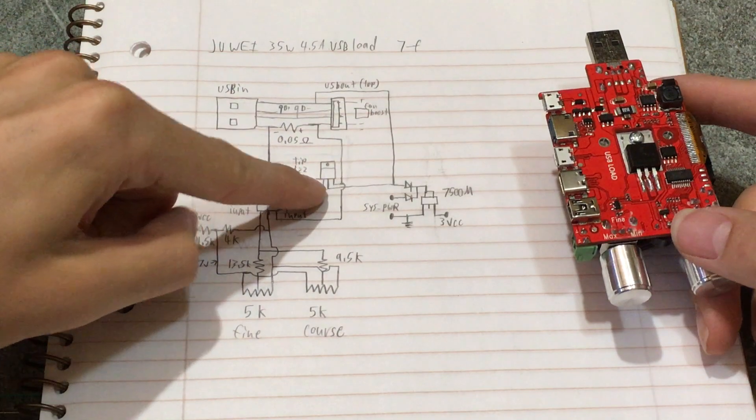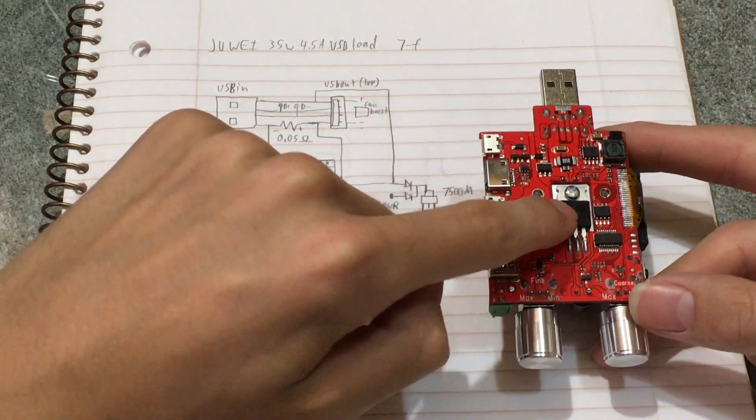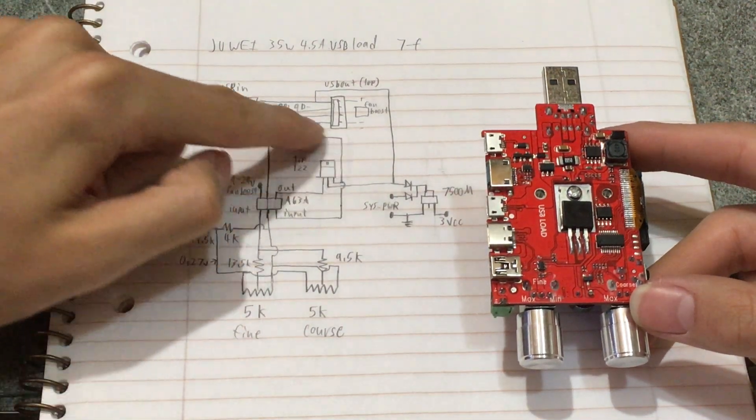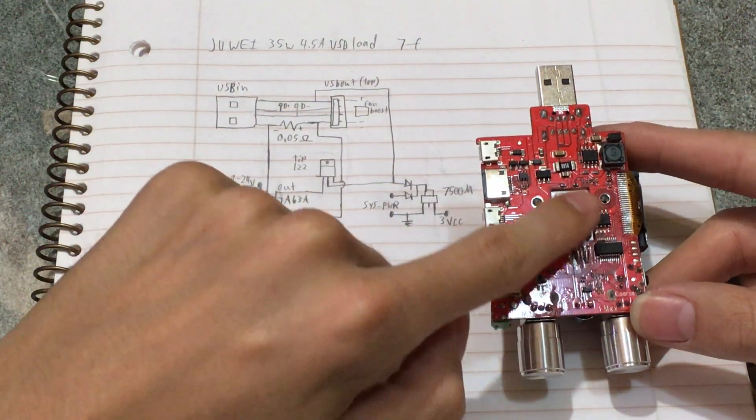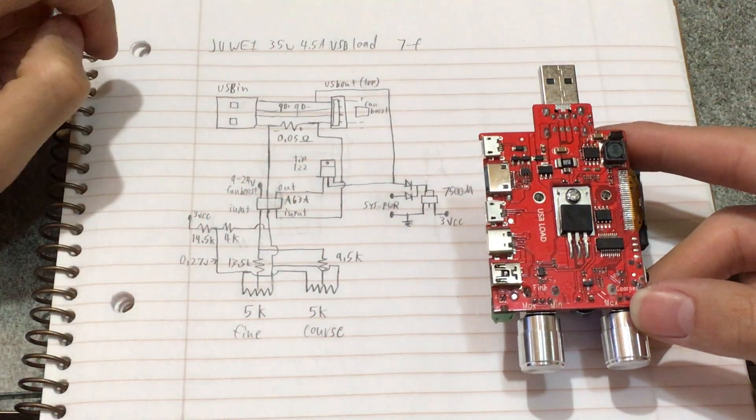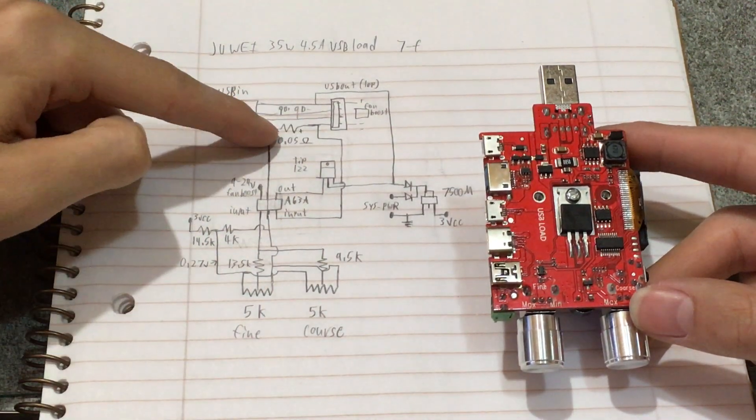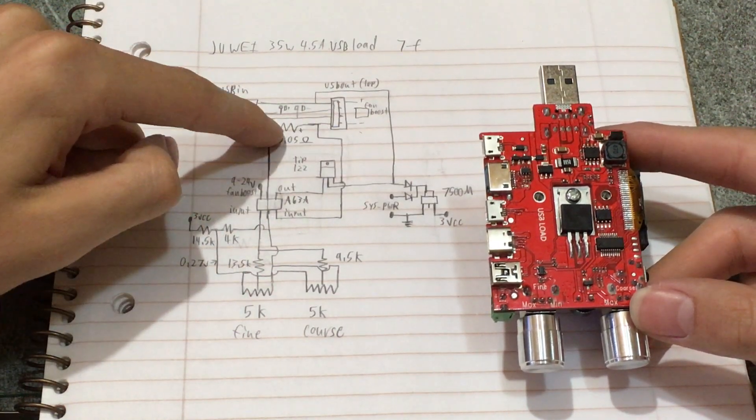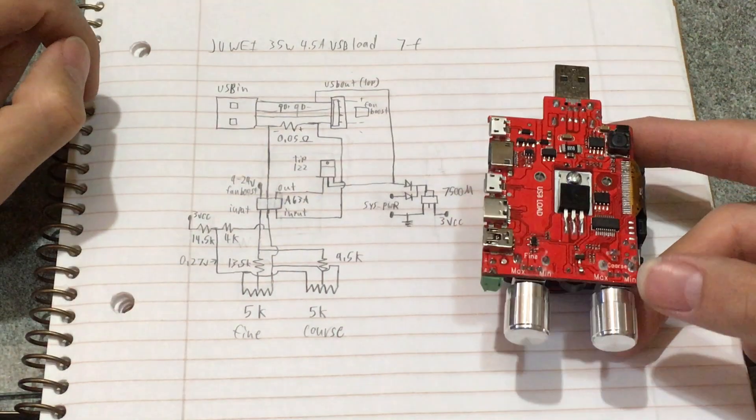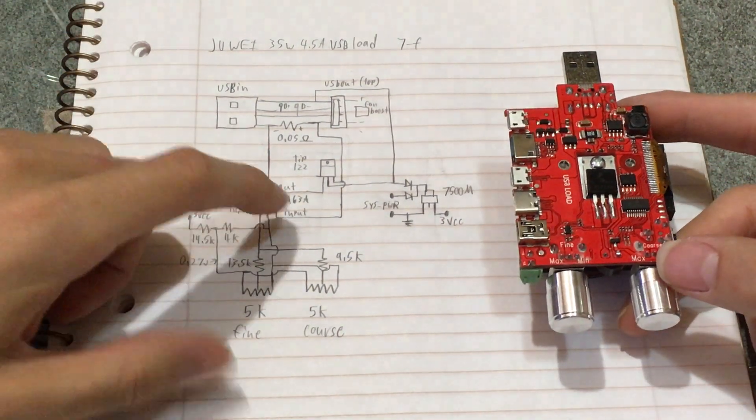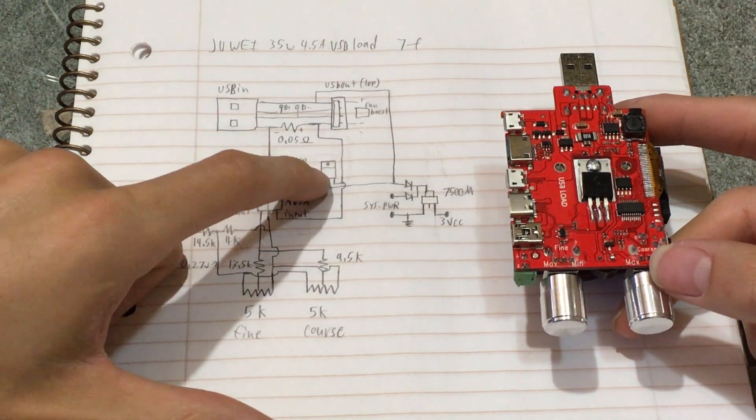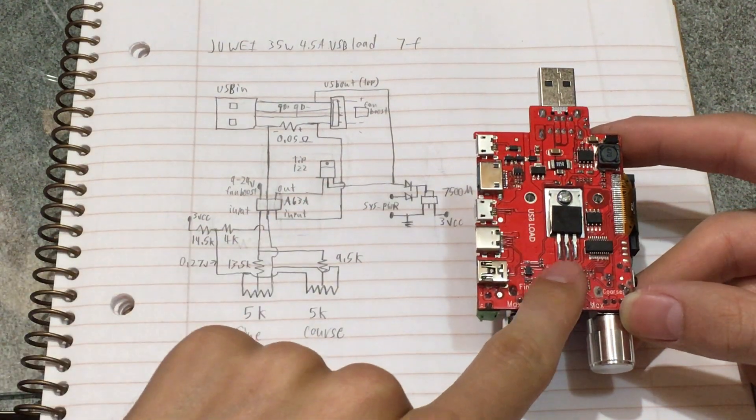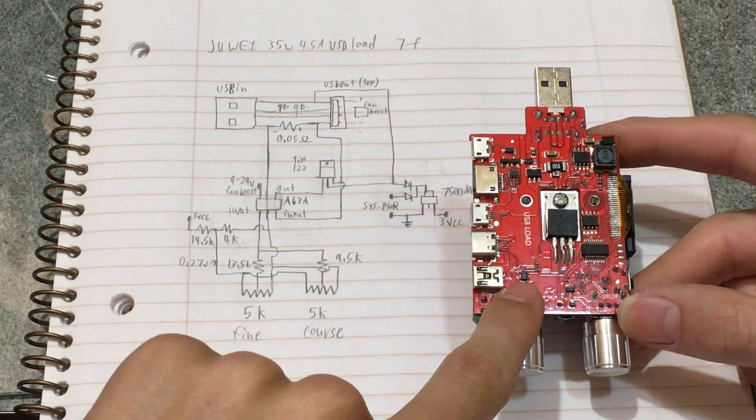So yeah positive, the 5 volts goes directly on the collector of this transistor, the TIP 122. The emitter of the transistor goes to the resistor and the reason why there's a plus and minus there is because when there's current flowing this will be positive and that side will be negative. The base of the transistor is powered by this A63A which should be this little guy right here.